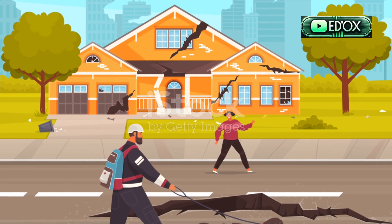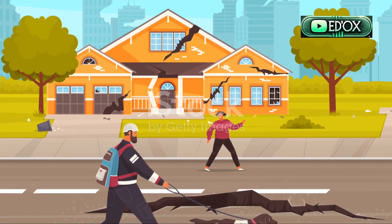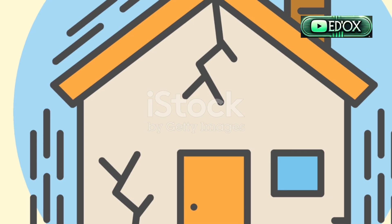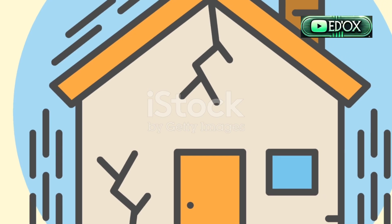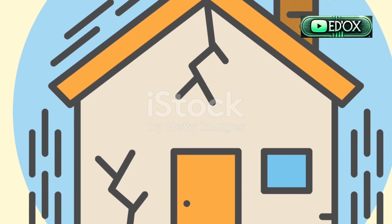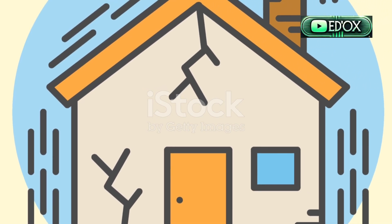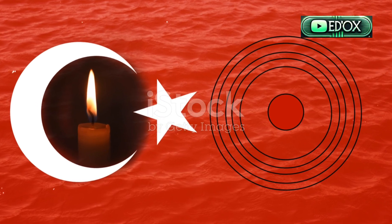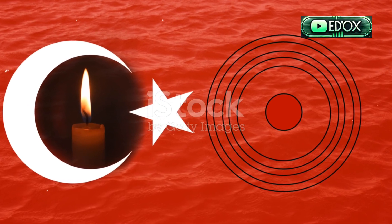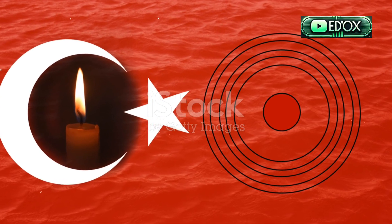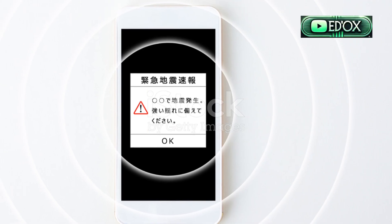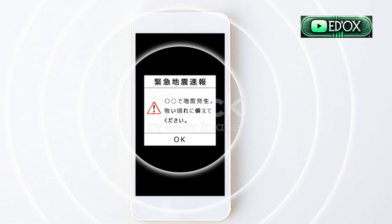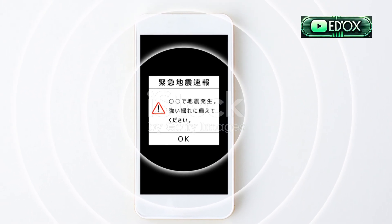Not all faults are equal — some are more dangerous than others. Active faults have moved in the last 10,000 years and are likely to move again, posing the highest earthquake risk. The West Valley Fault could trigger a magnitude 7.2 earthquake affecting Metro Manila. Inactive faults haven't moved for a long time and are unlikely to cause earthquakes.